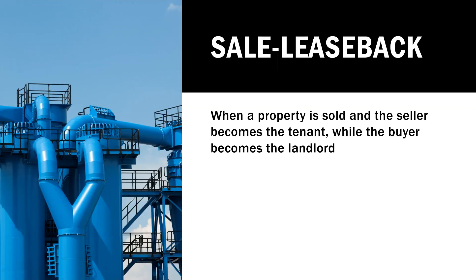S is for sale-leaseback. You sell and then you lease it back. This is usually done by commercial real estate owners — people that own industrial or manufacturing plants. They have the land, build the real estate on it, then sell the entire property and rent it back from the new owner. So the seller becomes the tenant and the previous buyer becomes the landlord.